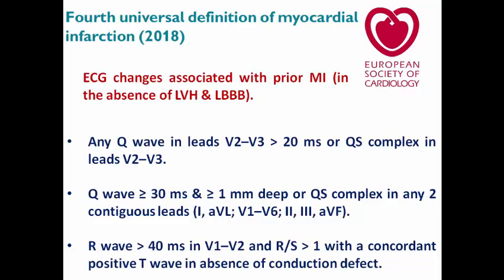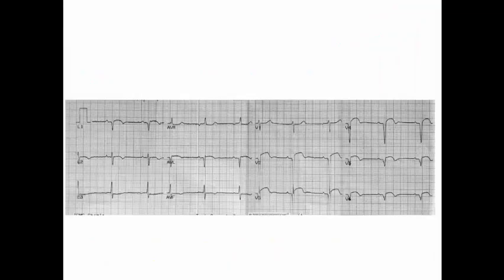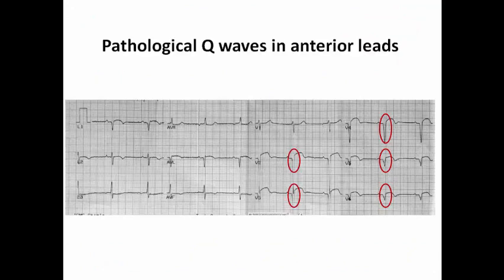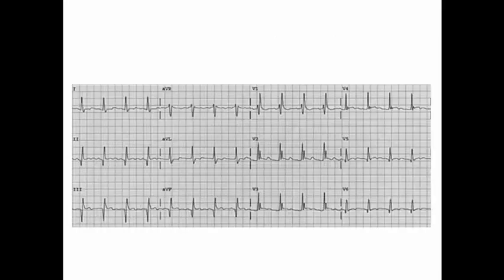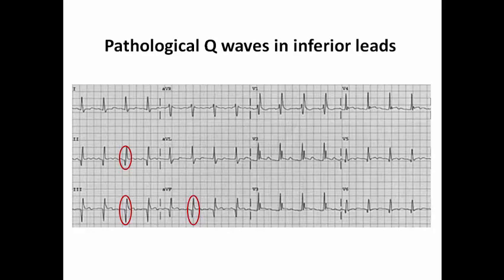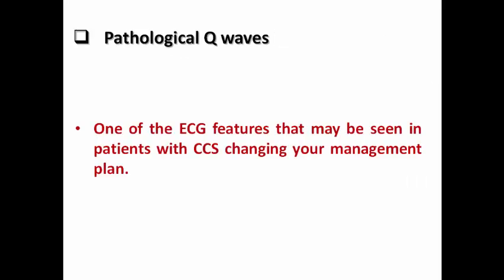So any one of these ECG features may suggest prior MI. For example, in this ECG we can see pathological Q waves from V2 to V6 with some residual ST elevation, suggesting an old anterior wall MI in a patient who is now off chest pain. In this other ECG we can see pathological Q waves in inferior leads suggesting an old inferior wall MI. Pathological Q waves can occur with STEMI or even non-STEMI, and this finding may alter my management plan as it suggests ischemic LV dysfunction.